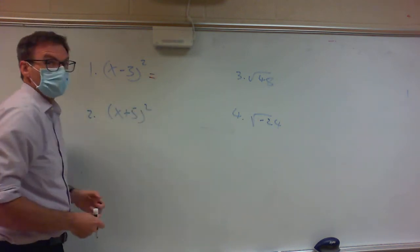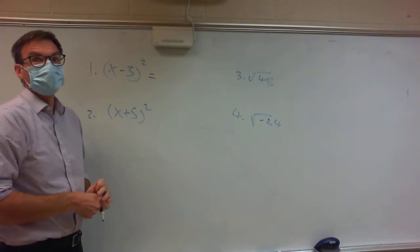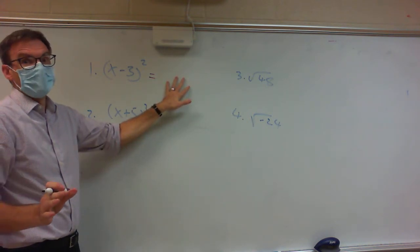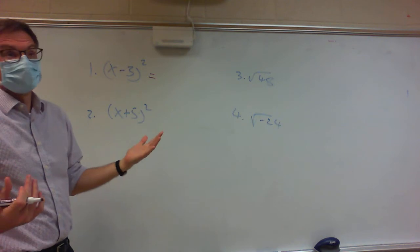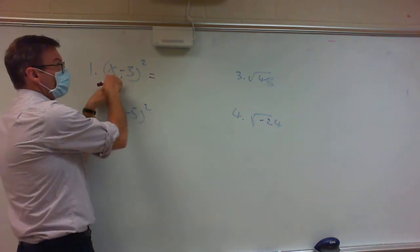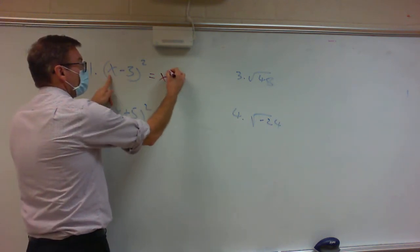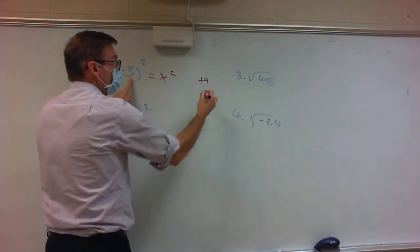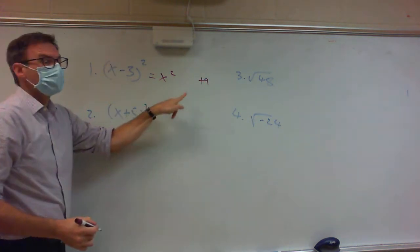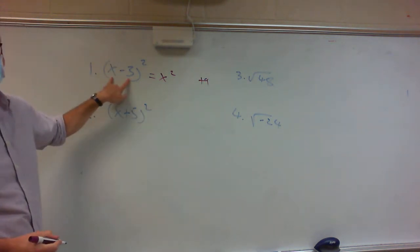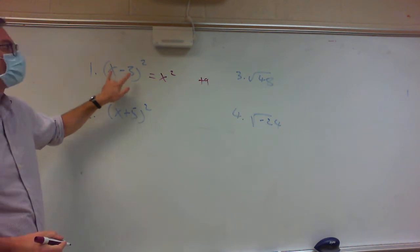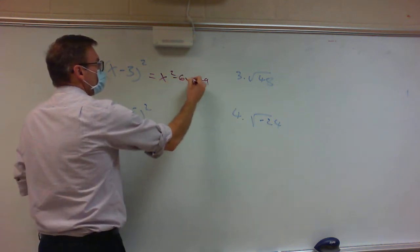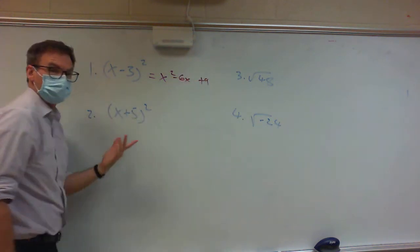Whenever you square a binomial, you're going to get three terms — every time. The first term is easy: you just square this. The last term is easy: you just square this and it's always positive. The middle term: you multiply these together and double it. So I'll get negative 3x times 2, giving me a minus 6x, and we're done.